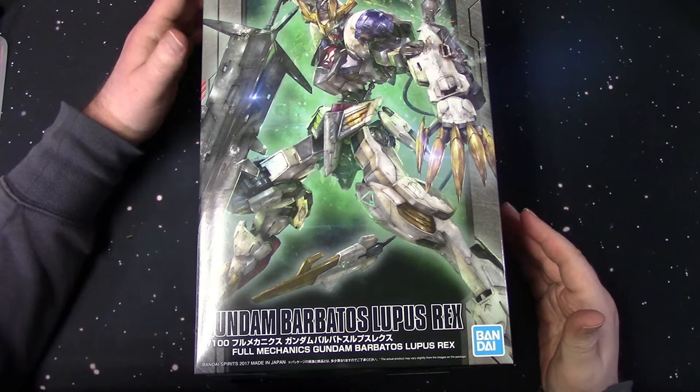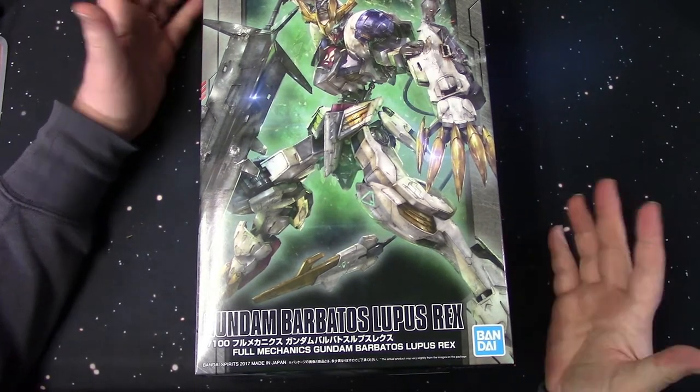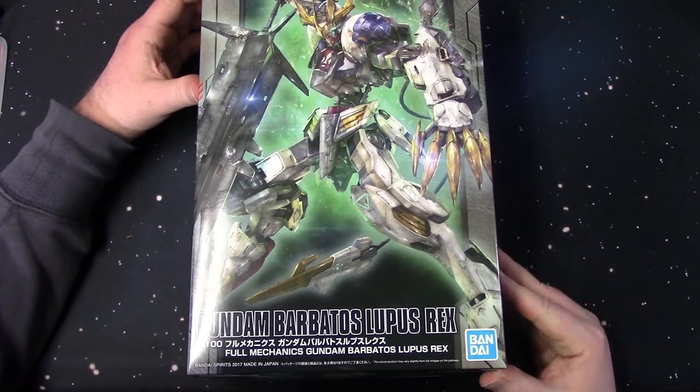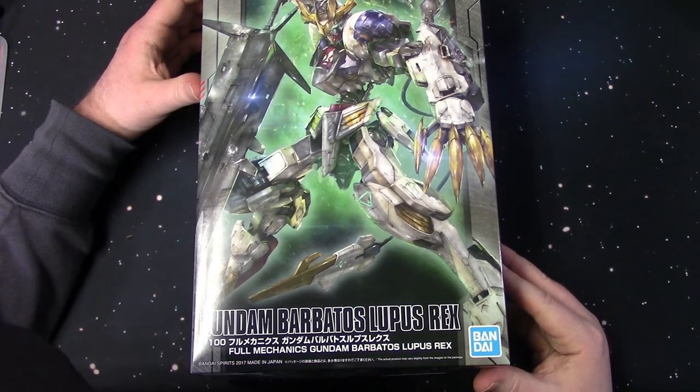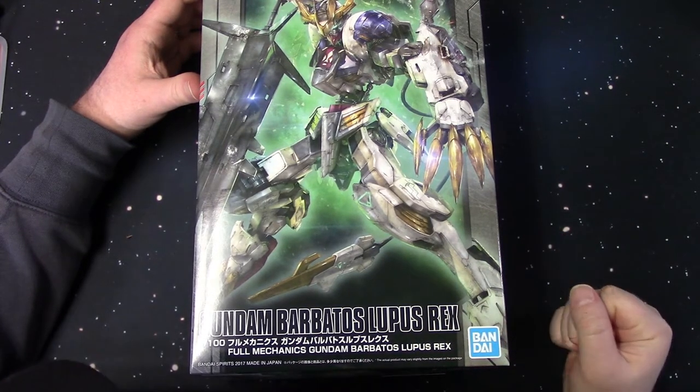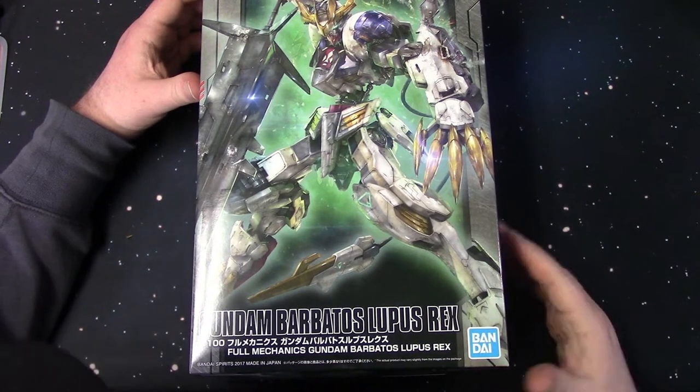But as I went on, I was looking at the original Barbatos. And I was like, man, this looks kind of demonic. Obviously, because it's supposed to represent that. Barbatos is a demonic name. And Lupus Rex. So, it's like the great bearded wolf or something. I can't remember what it was. It was something of that lines.